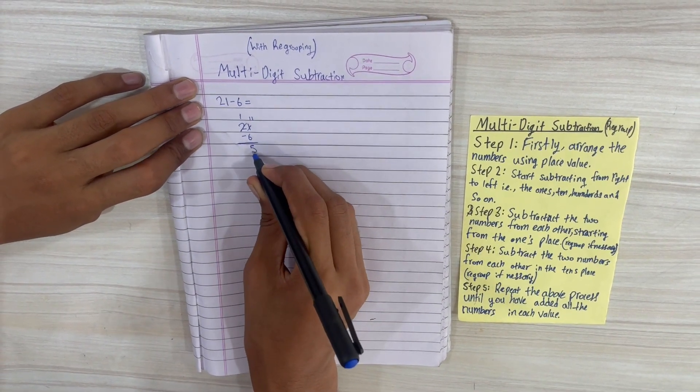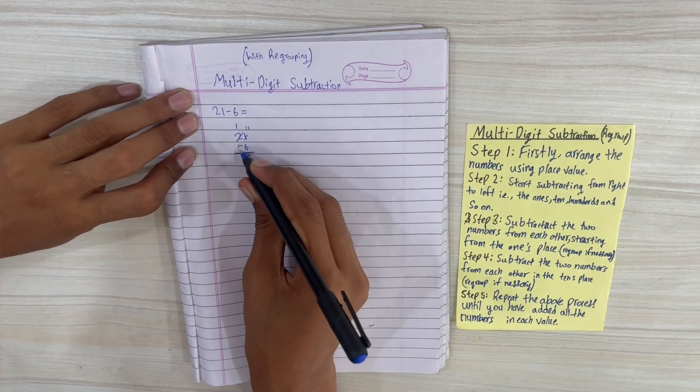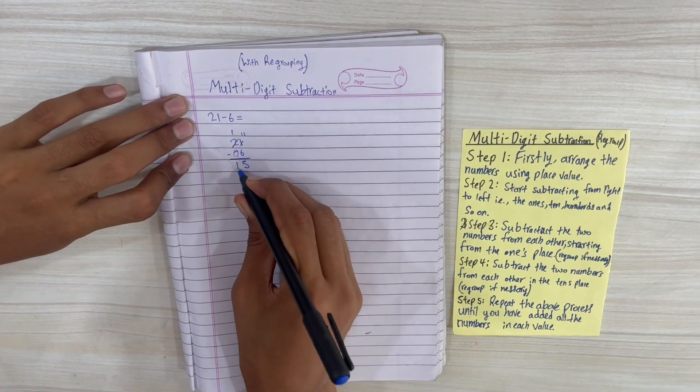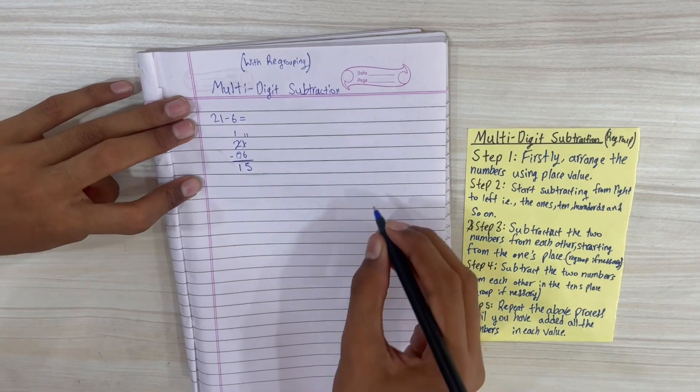What is 11 minus 6? 5. And 1, what is 1 minus 0? Since there's no number here, you can imagine it as a 0. So 1 minus 0 is equal to 1, so the answer is 15. Now we'll do another question.